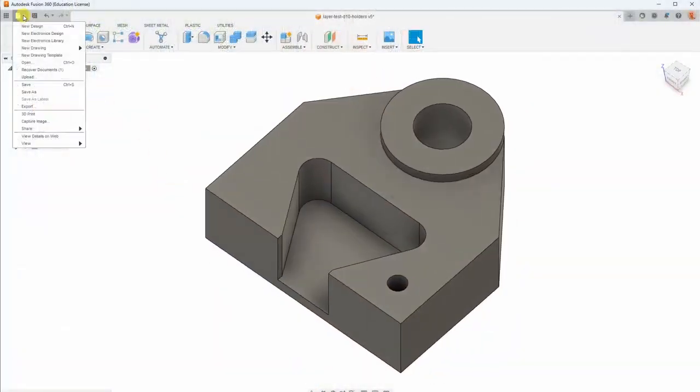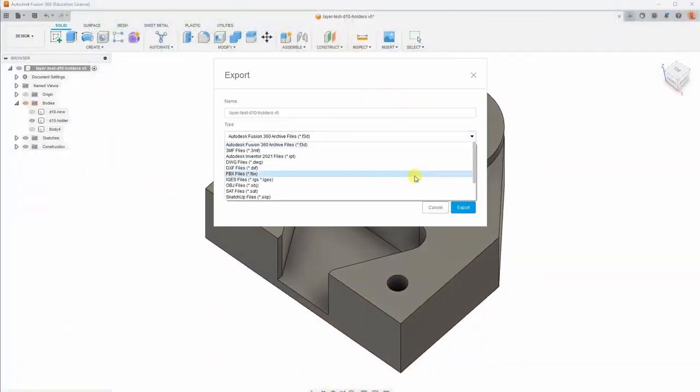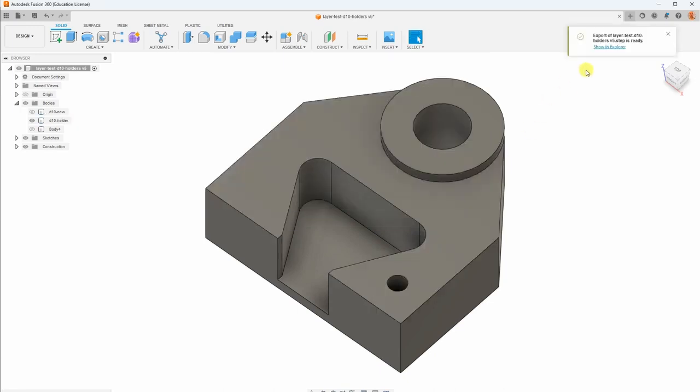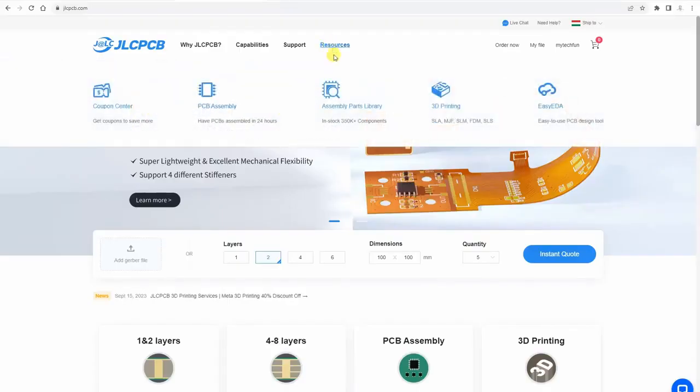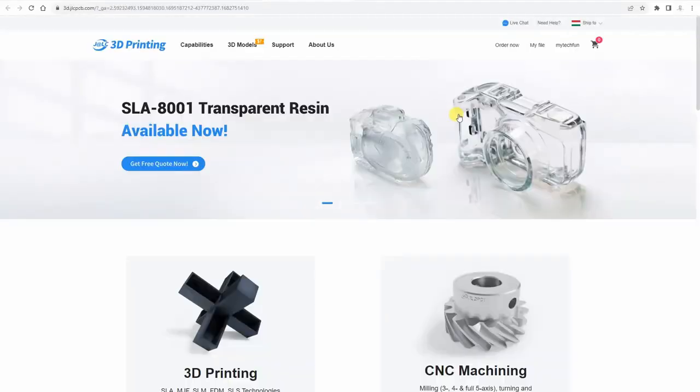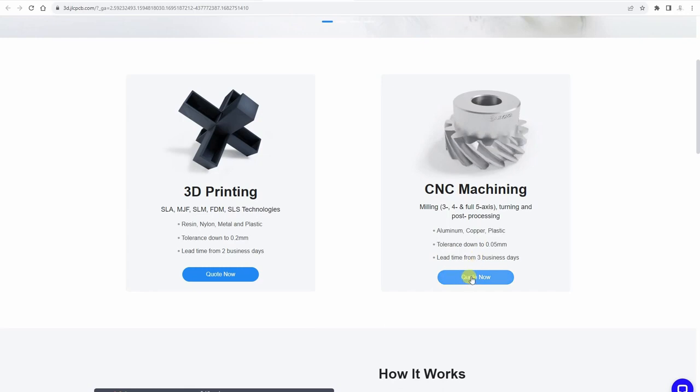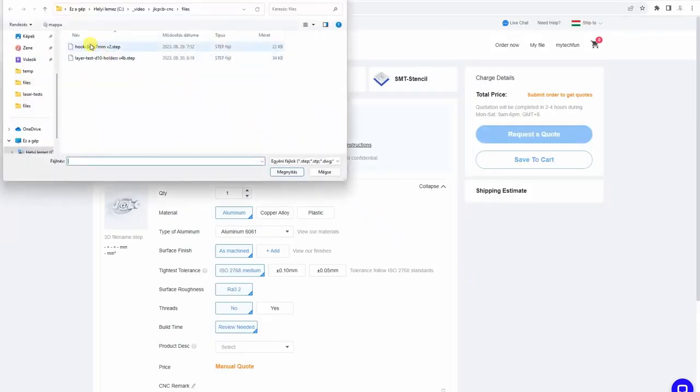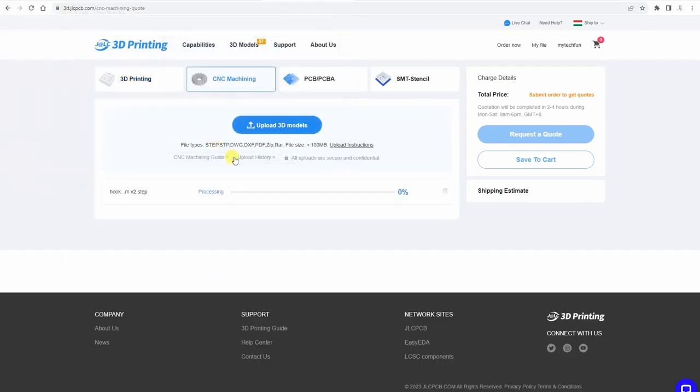The ordering process is very simple but first you have to prepare a STEP file, not STL. It can be exported from Fusion 360 for example. The next step is on their website, we have to go to resources, choose CNC machining, and then upload those STEP files. The next important step is to choose the correct material.